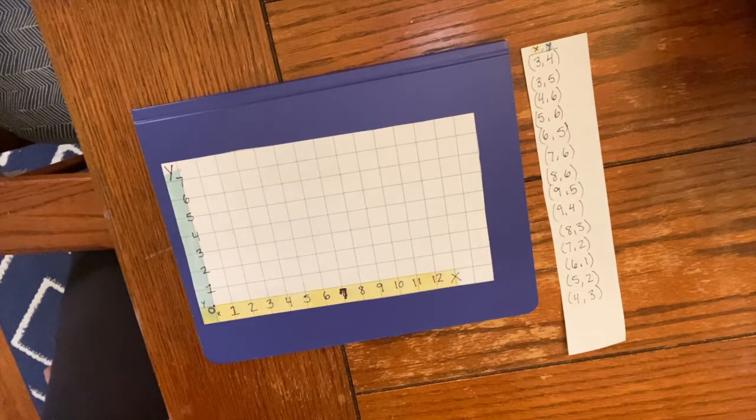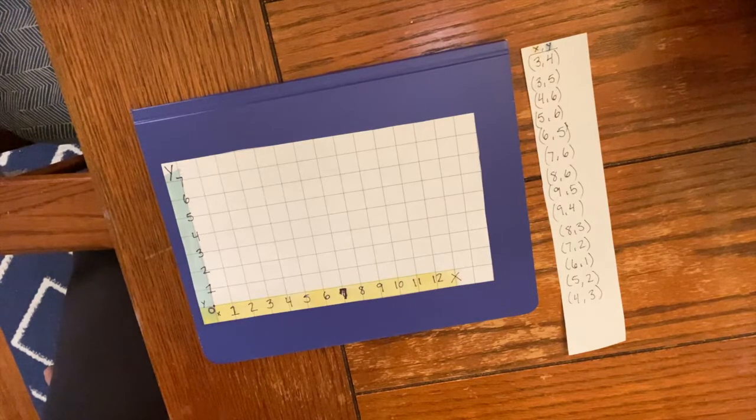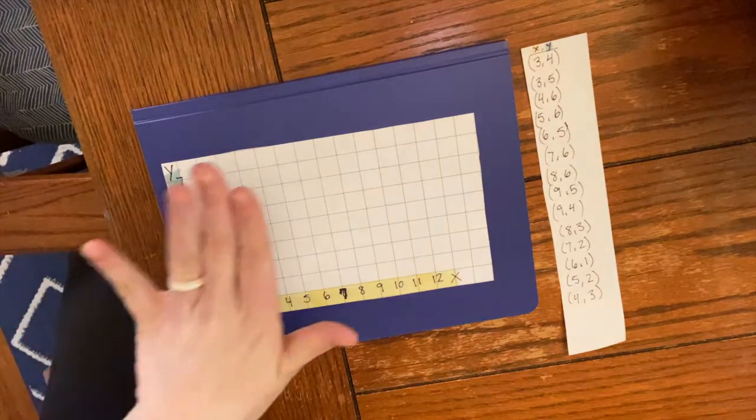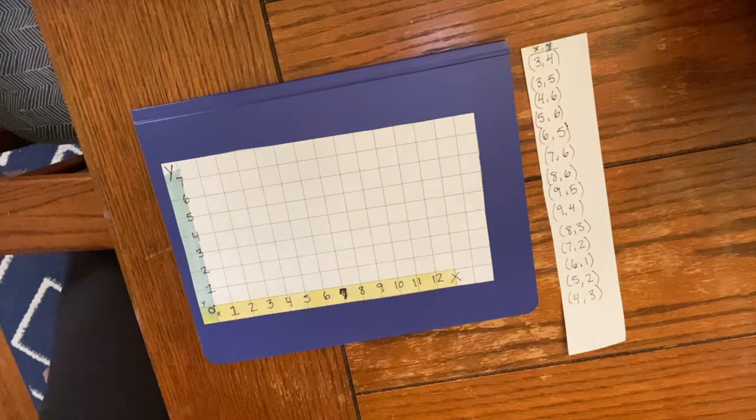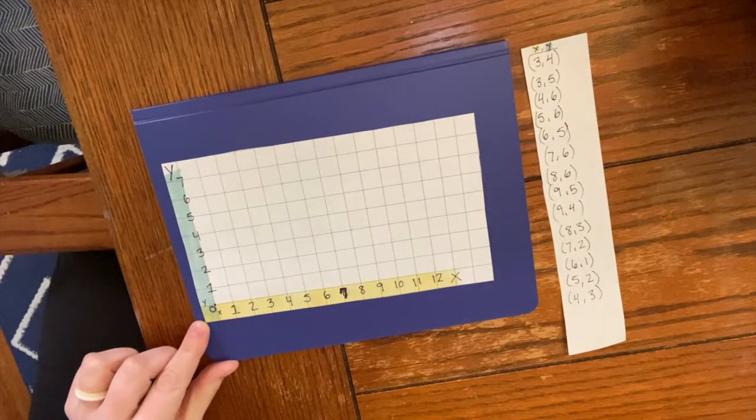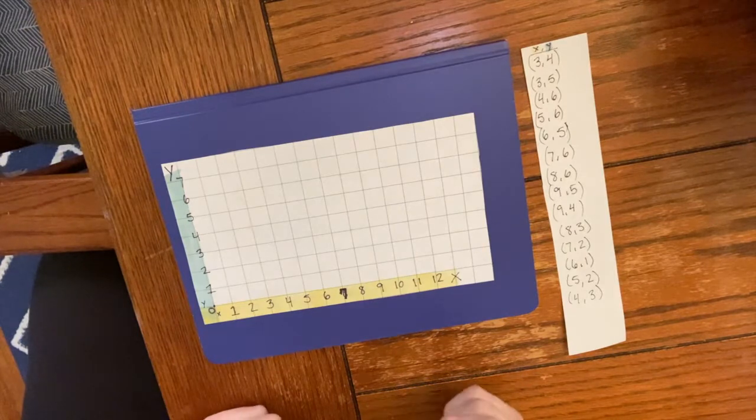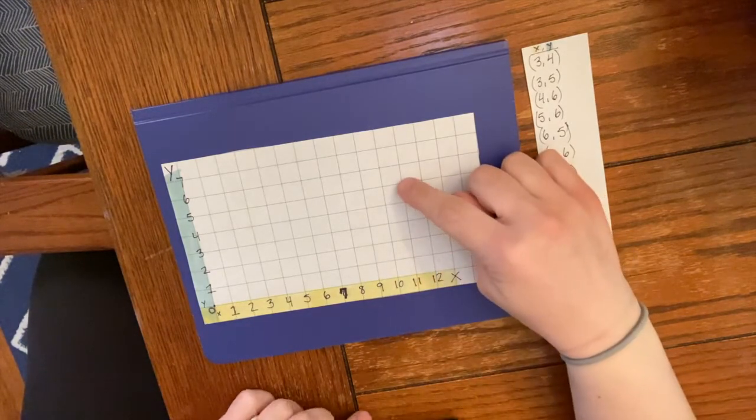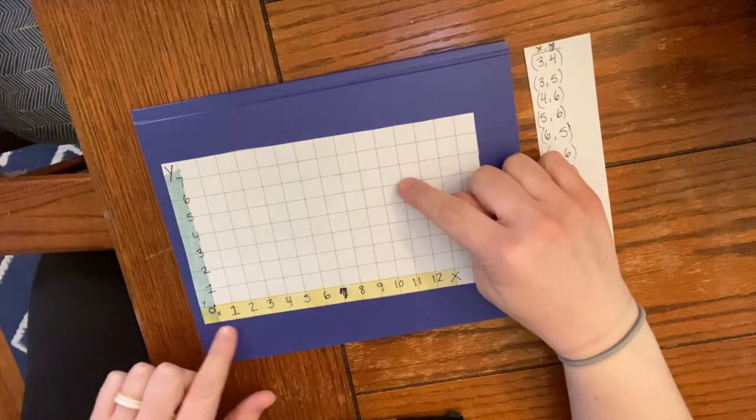He wondered what would be the best way to describe exactly where that fly is on the ceiling. So he decided, alright, I'm gonna look at my ceiling. Let's pretend this piece of graph paper is a ceiling and he put this corner over here as the starting point.